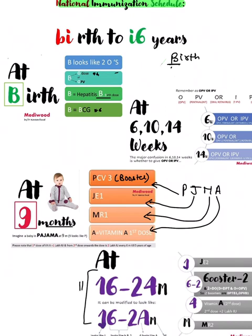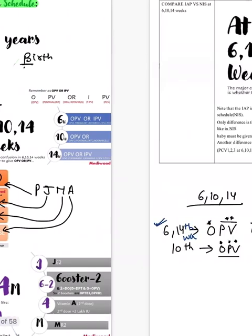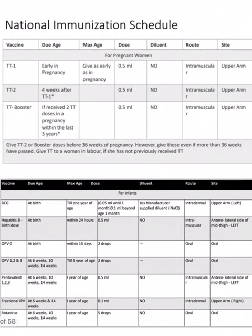At 16 to 24 months, the schedule continues similarly. Instead of a PCV booster, two boosters are given: an OPV booster and a DPT booster. Also at this visit: Japanese Encephalitis second dose, Measles-Rubella second dose, and Vitamin A second dose. This covers the entire national immunization schedule.